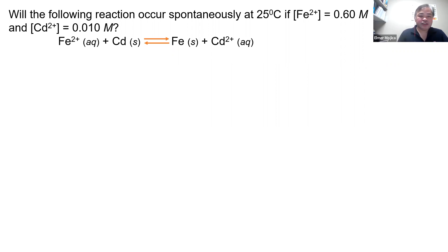So you have your Fe2+ plus cadmium producing Fe and cadmium 2+. If you're going to look at this reaction, we could say that the one that undergoes oxidation is the cadmium.